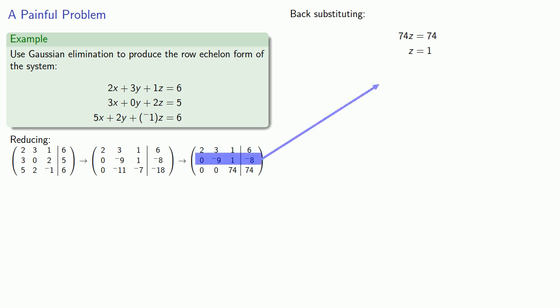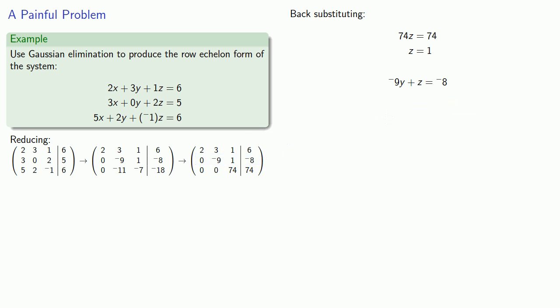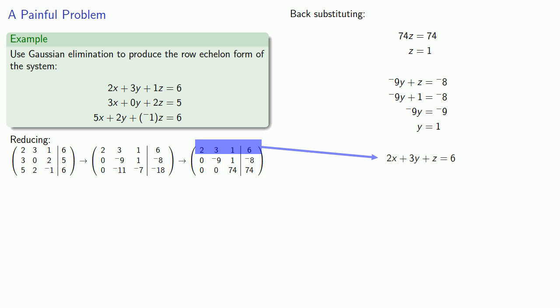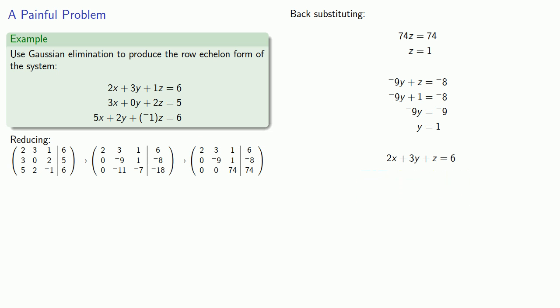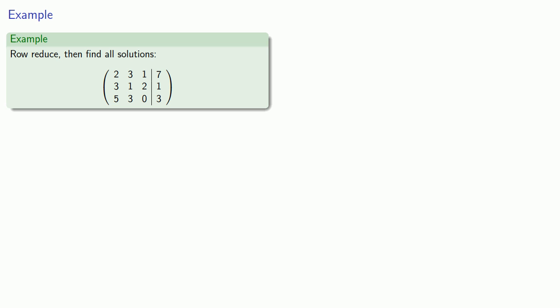The next to last row corresponds to negative 9y plus z equals negative 8. We can substitute in our value for z equals 1 and solve for y. And finally, the first row corresponds to the equation 2x plus 3y plus z equals 6. We'll substitute in our values for y and z and solve the equation for x. While we won't be able to avoid fractions forever, we can delay their onset for quite some time, as this example shows.